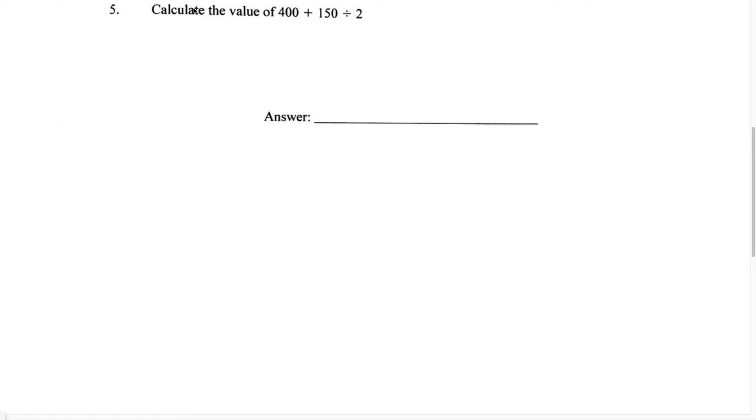Alright, now this question says calculate the value of 400 plus 150 divided by 2. So we have different operations happening in this one problem. Let's write this. We have 400 plus 150 divided by 2.